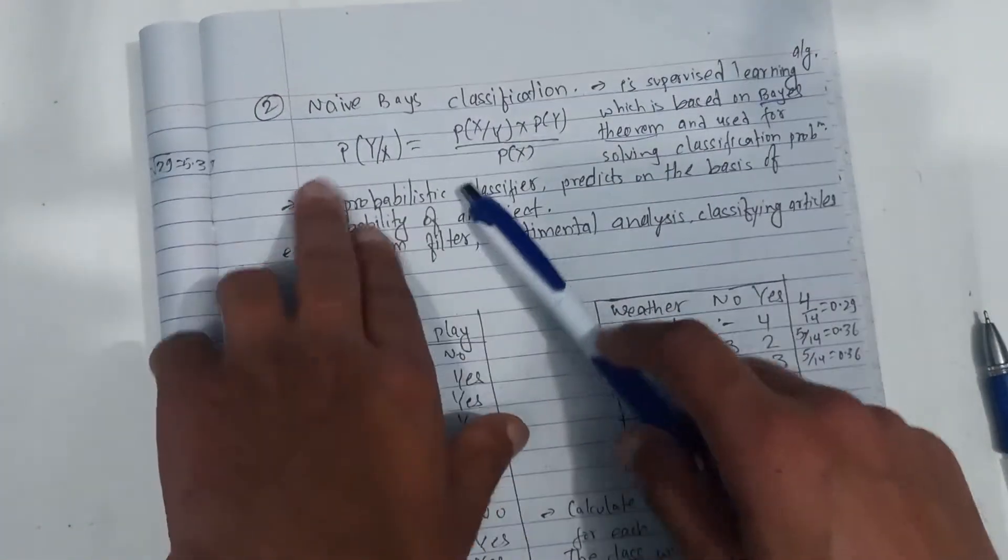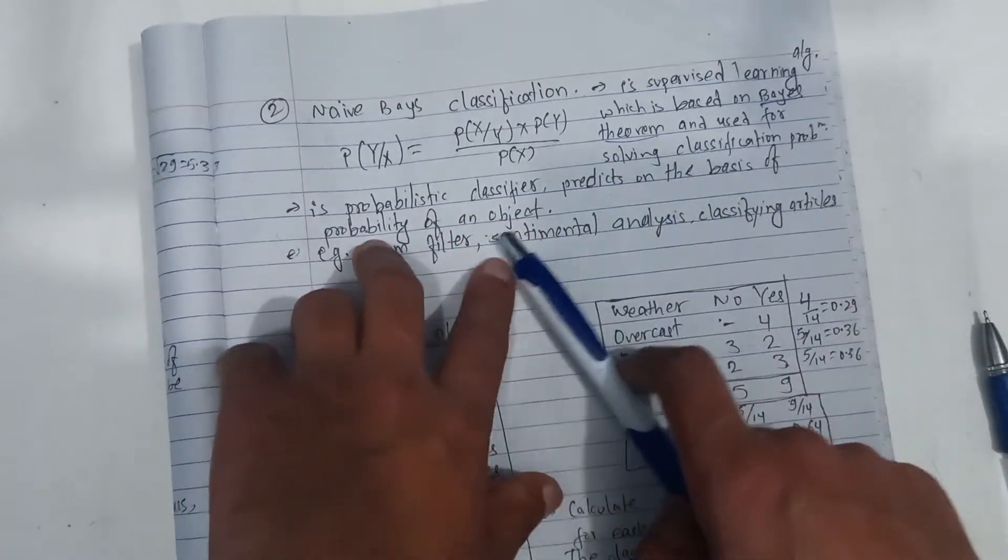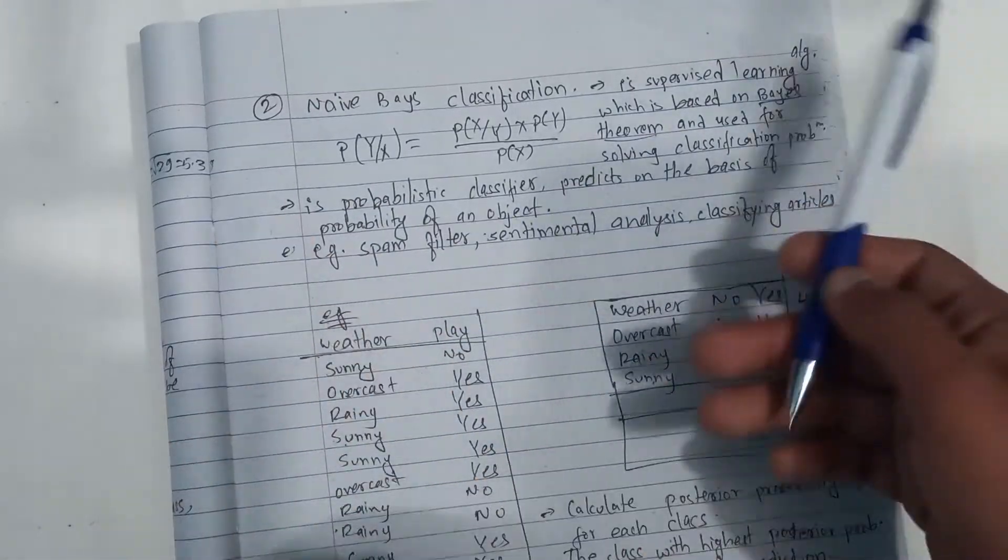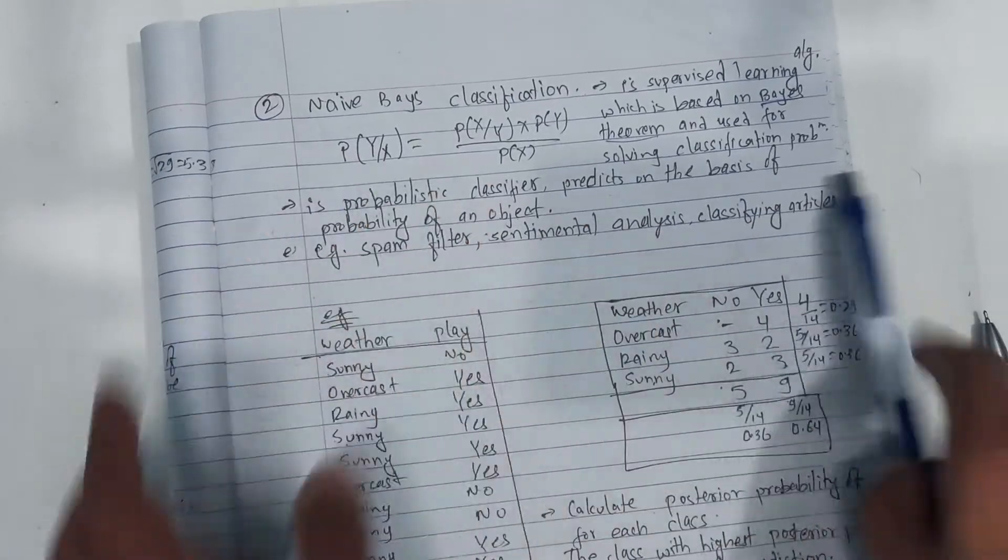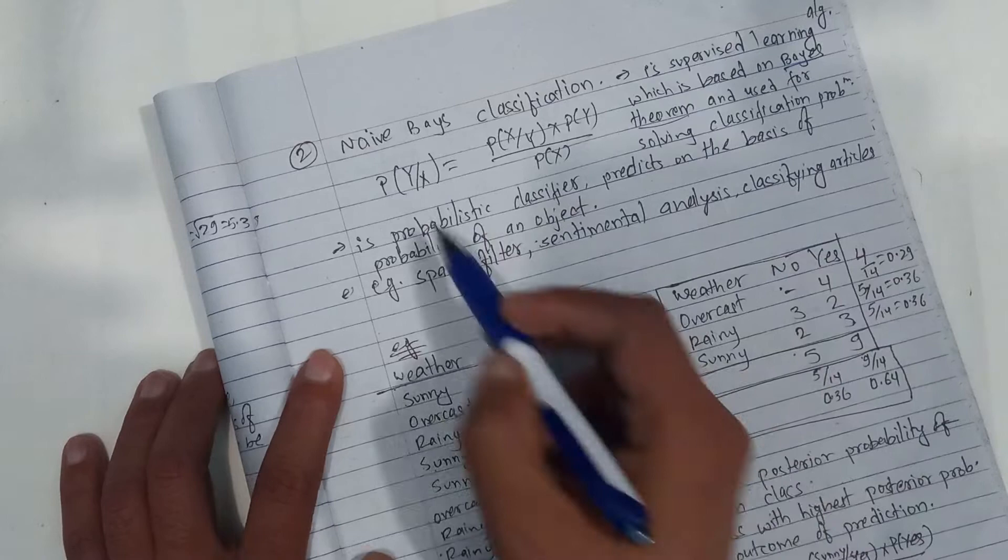Naive Bayes classification is a probabilistic classifier that predicts on the basis of the probability of an object. For example: spam filter, sentiment analysis, classification of articles.